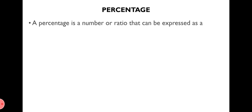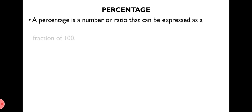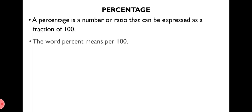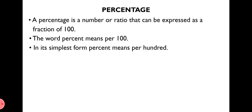Another way of comparing quantities is percentage. A percentage is a number or ratio that can be expressed as a fraction of 100. For example, 5% is written as 5/100, and 29% is written as 29/100. In simple form, percent means per 100.